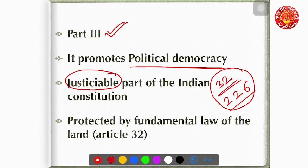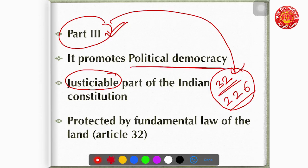The rights in the Constitution which are protected by the fundamental law of the land are called Fundamental Rights. The rights given in Part Three of the Constitution are protected by the Constitution under Article 32 — that is why they are called Fundamental Rights.